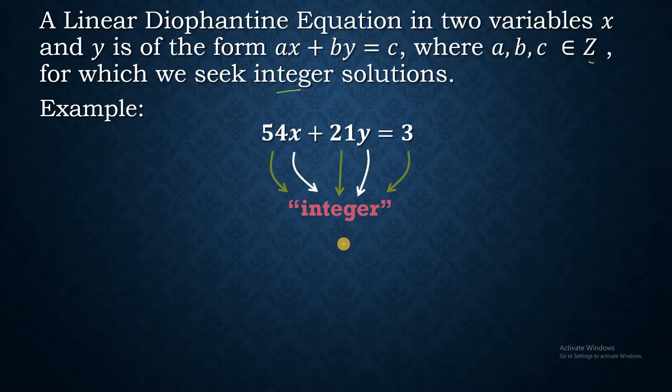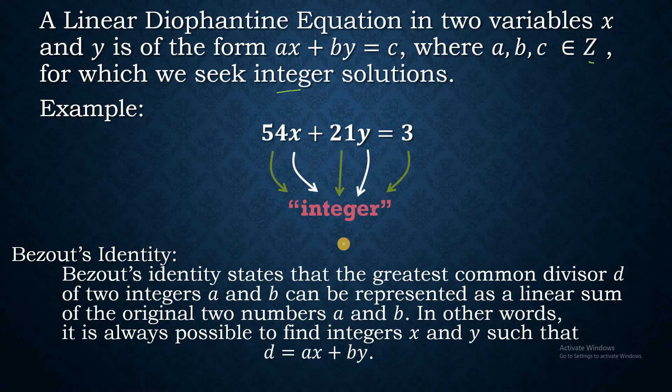Now, there is this special theorem called Bezout's identity, which states that the greatest common divisor or GCD of two integers a and b can be represented as a linear sum of the original two numbers a and b. In other words, it is always possible to find integers x and y such that the GCD of a and b is equal to ax plus by. So let's start with the solution.